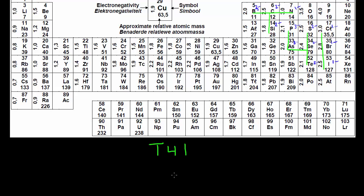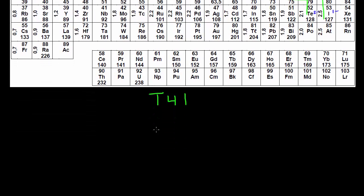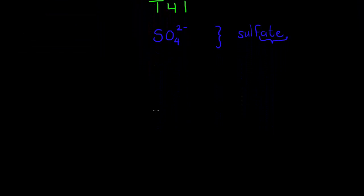Now all of these received a prefix. Let me take an example like sulfur. Sulfur, when it gets its four oxygens and it's a two negative charge, is called sulfate. Sulfate is the base. I call it the base because from here we're going to name the other anions that have a different number of oxygens. The base gets the suffix "-ate", like sulfate or chlorate.